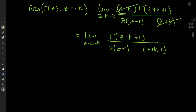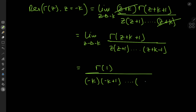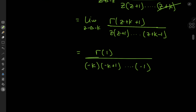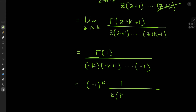All that's left is to evaluate the limit. As z tends to −k, the argument z + k tends to 0, so the numerator becomes Γ(1). In the denominator we have (−k)·(−k + 1)···(−1). We can factor out (−1) from each of the k factors, giving (−1)^k. Since the reciprocal of (−1)^k is again (−1)^k, we get (−1)^k times Γ(1), and Γ(1) = 0! = 1. The remaining denominator is k·(k−1)···1.